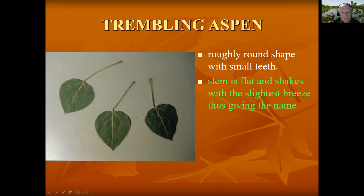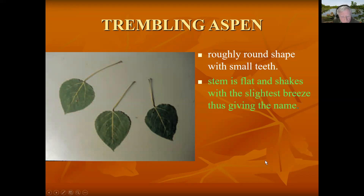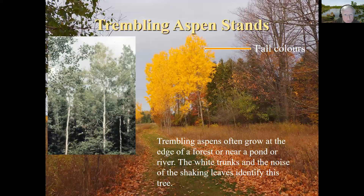The trembling aspen is roughly rounded, but the stem is flat and shakes with the slightest breeze, thus giving it its name. It can also be called quaking aspen. Notice that this print is in green — anything in green could be on the conservation quiz portion of tree bee. Trembling aspen stands have very bright white trunks, and the color in the fall is a beautiful yellow. It is often mistaken for a birch from a distance.